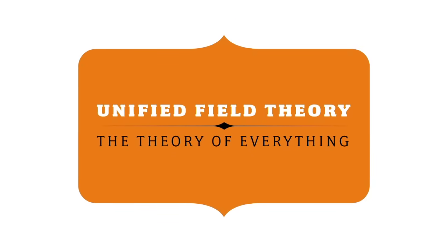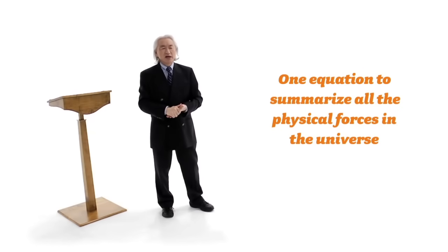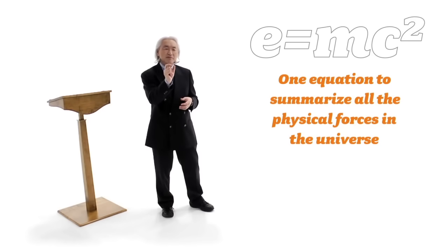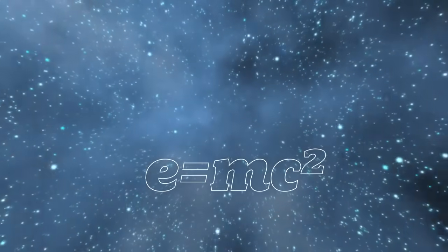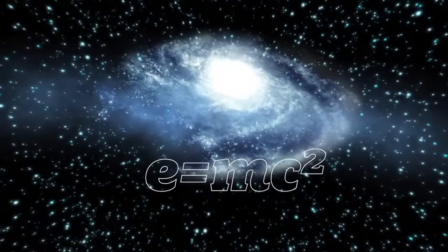So as a child of eight, I decided to find out what was this problem. Years later, I began to realize that it was the theory of everything, the unified field theory, an equation that would summarize all the physical forces in the universe. An equation like E equals mc squared. That equation is half an inch long, and that equation unlocks the secret of the stars. Why do the stars shine? Why does the galaxy light up? Why do we have energy on the earth?